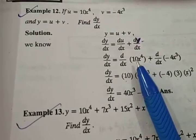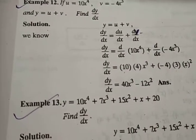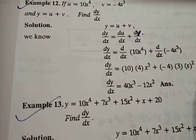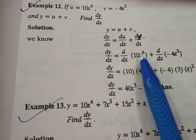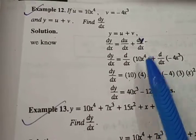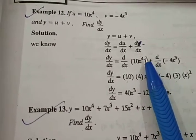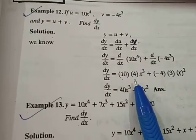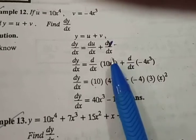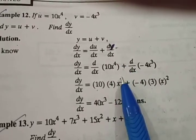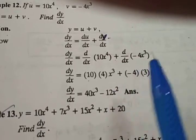dy/dx equals — here we have a constant multiplied by x raised to power 4. So the constant comes out: 10 times the derivative of x⁴. By the power rule, the power comes down — 4 into x raised to power 4 minus 1, that is x raised to power 3.